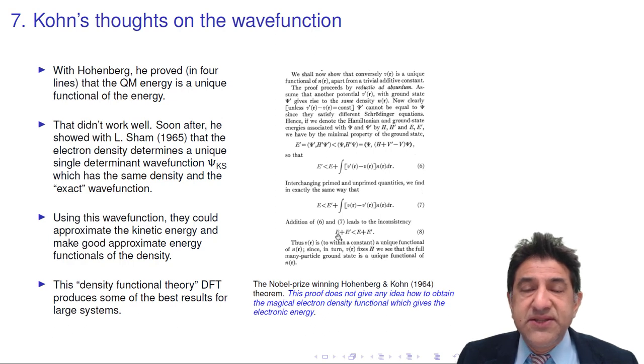It turns out that this particular approach didn't work too well for them. So soon after, he showed with Lou Sham in 1965 that the electron density determines a unique single determinant wave function called the Kohn-Sham determinant wave function, which has the same electron density as the exact wave function. And using that idea, he could approximate the kinetic energy of the system and make good approximations to the total electron density.